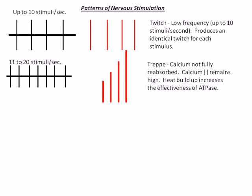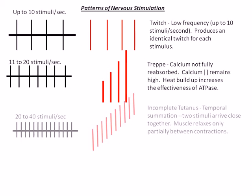When the nerve stimulates the muscle at the rate of 20 to 40 stimuli per second, the contraction pattern is referred to as incomplete tetanus. In this case, a stair-step pattern of contraction is noted.